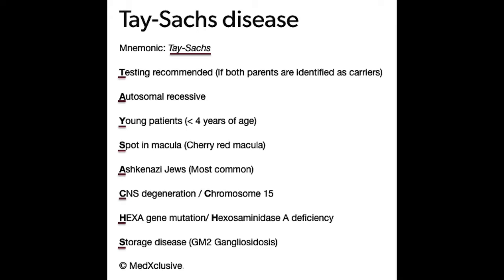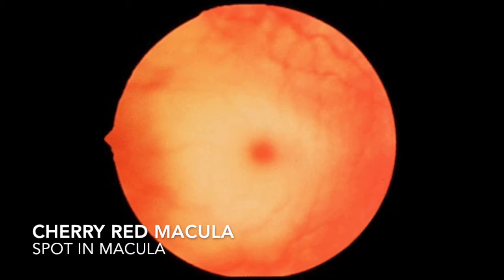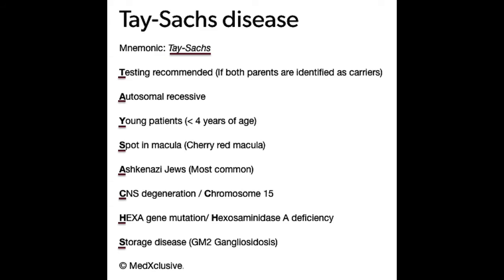It is seen in young patients, that is, less than 4 years of age. S stands for spotted macula, that is, cherry red macula. Moving on, this disease is more commonly seen in Ashkenazi Jews.